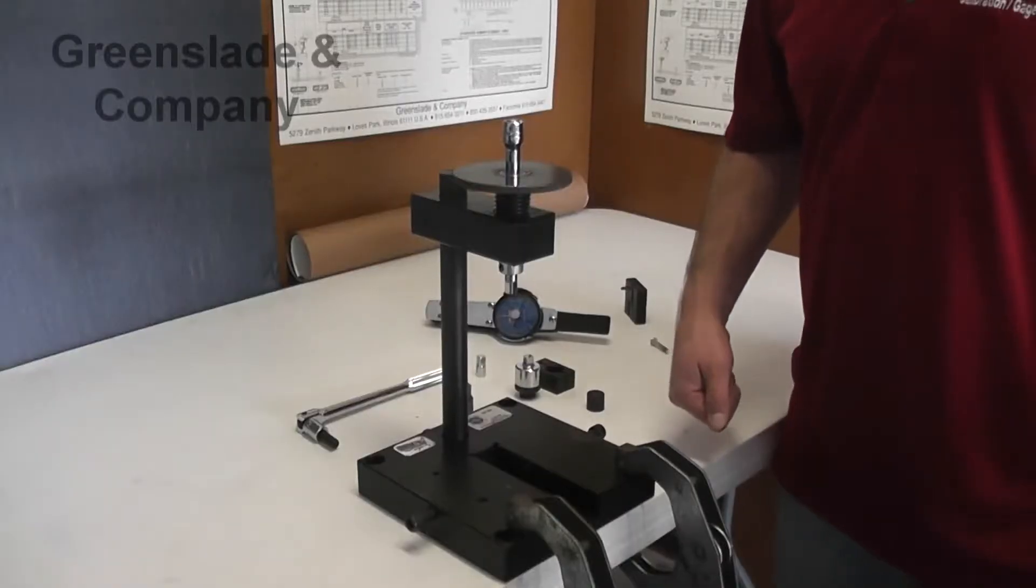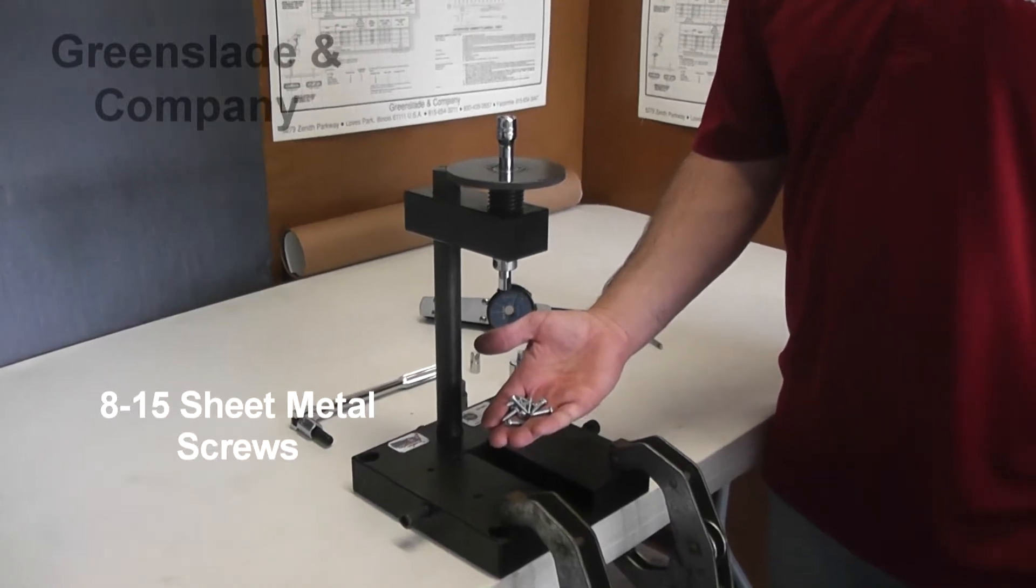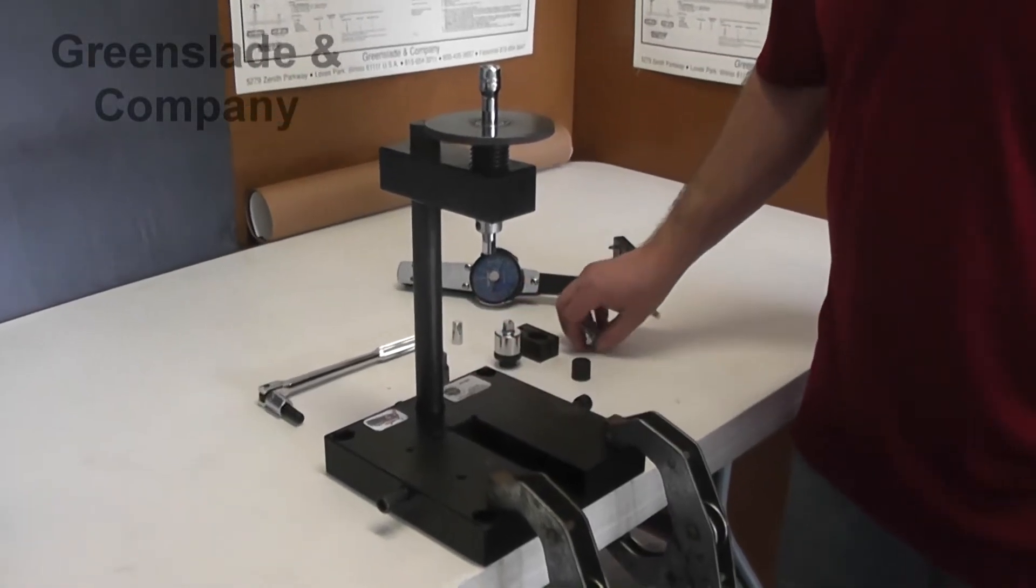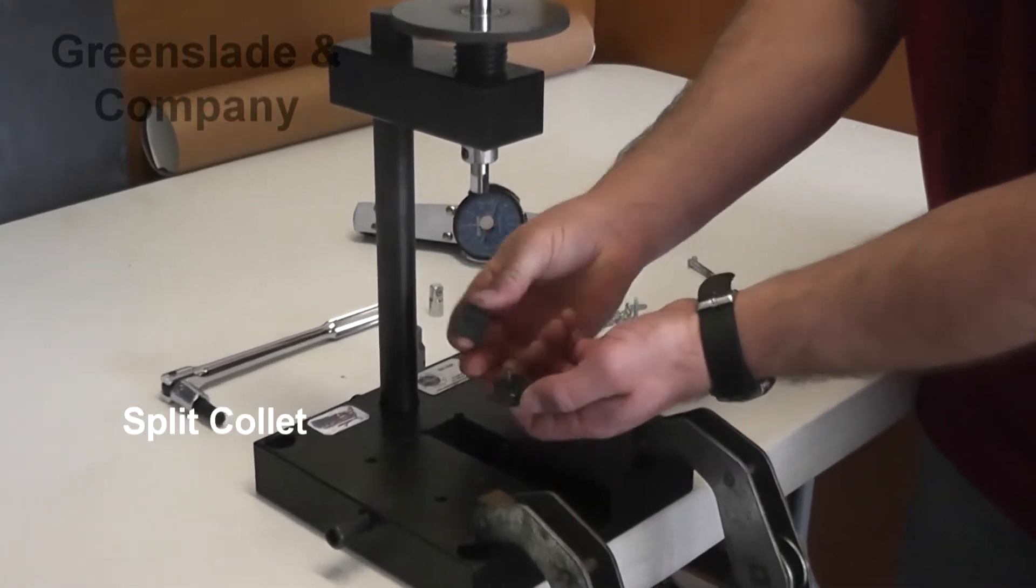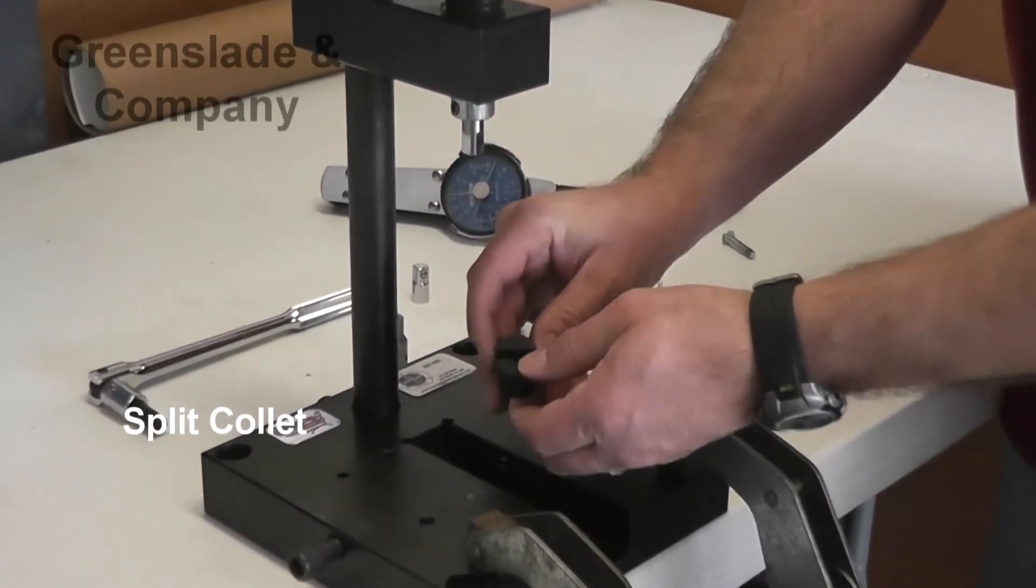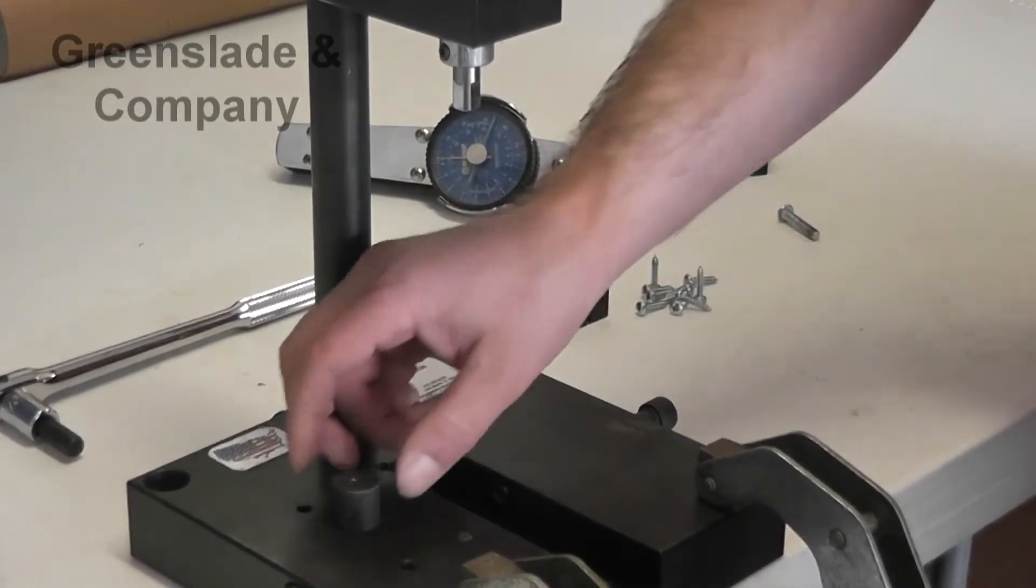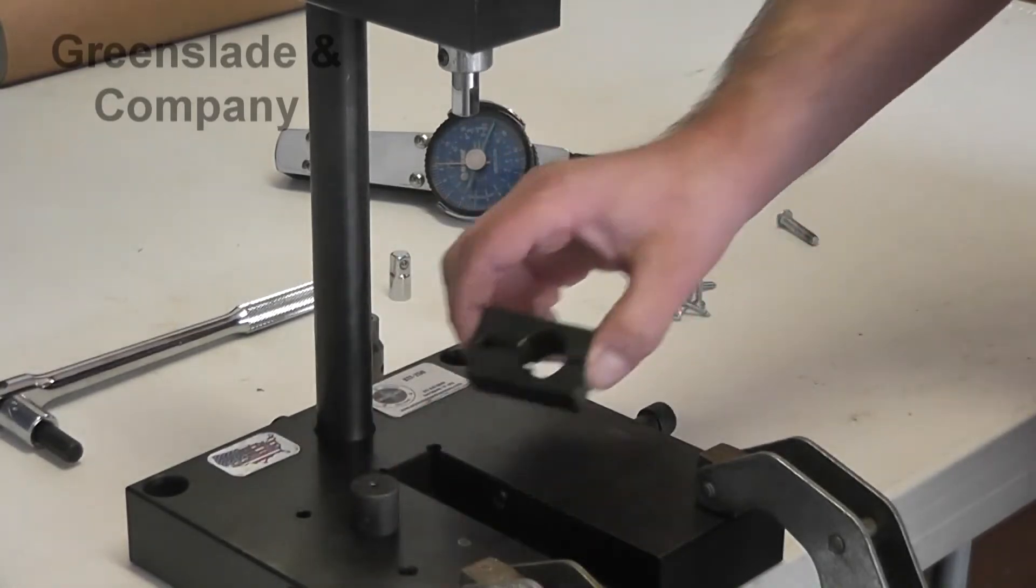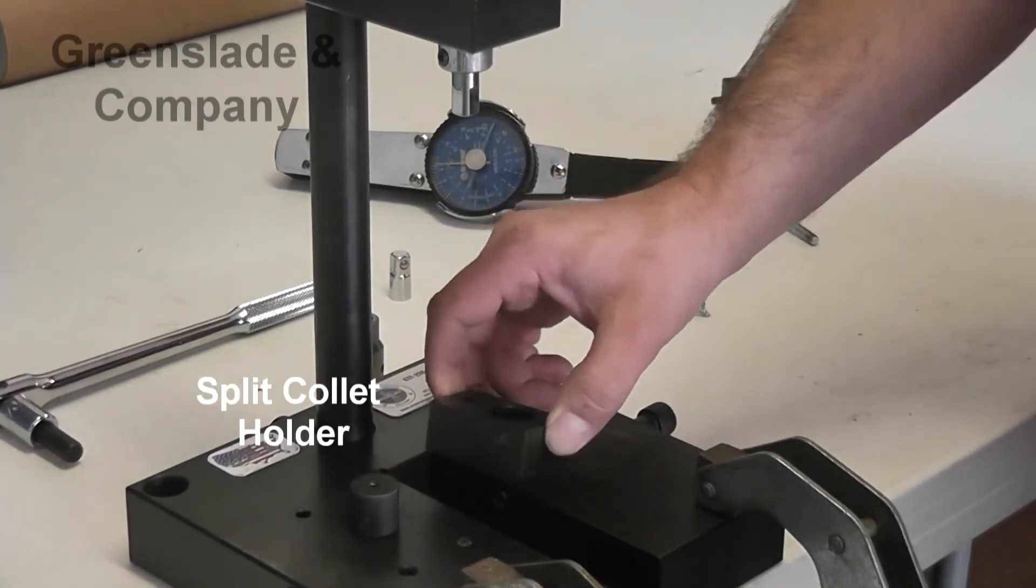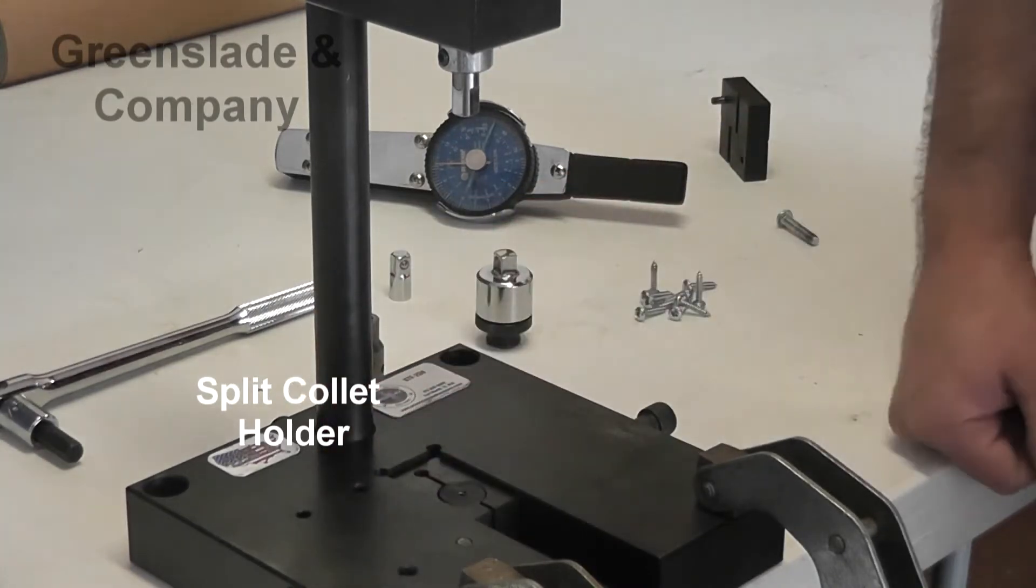Let's get started gathering our tools. We have our 8-15 sheet metal screws. First thing we're going to find is our split collet, our 8-15 split collet. This will not fit in the slot by itself. It requires a split collet holder which fits down into the slot, and the collet fits in there.